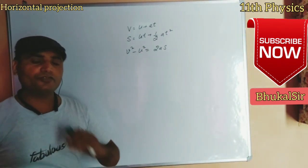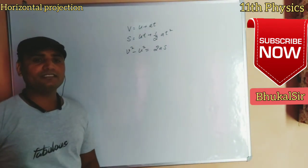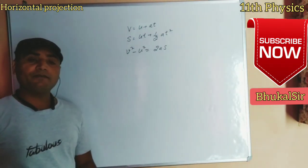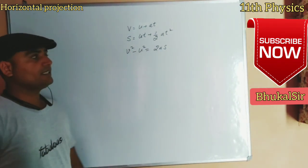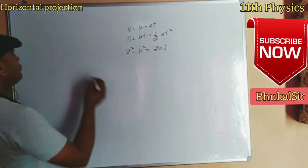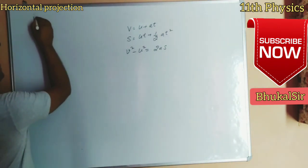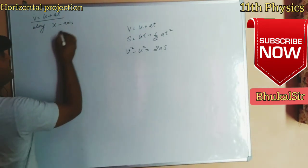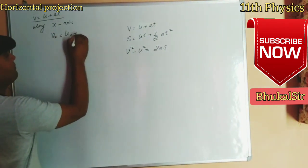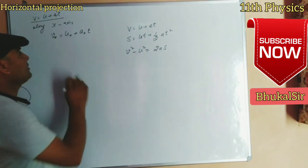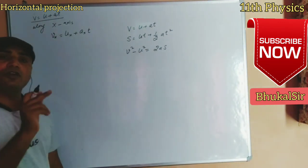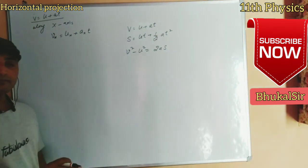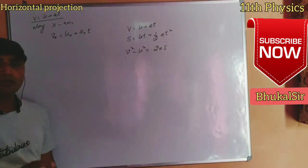These equations apply to an object moving along a straight line with no particular coordinates. But when we talk about the motion of an object under the effect of gravity, we use coordinates — the x-axis and y-axis. Along the x-axis, the first equation V = u + at is written as Vx = Ux + Ax·t, where Vx is the final velocity along x-axis, Ux is the initial velocity along x-axis, and Ax is the acceleration along x-axis.